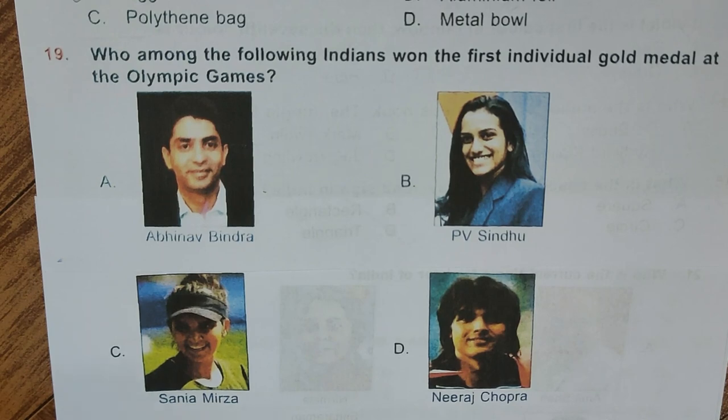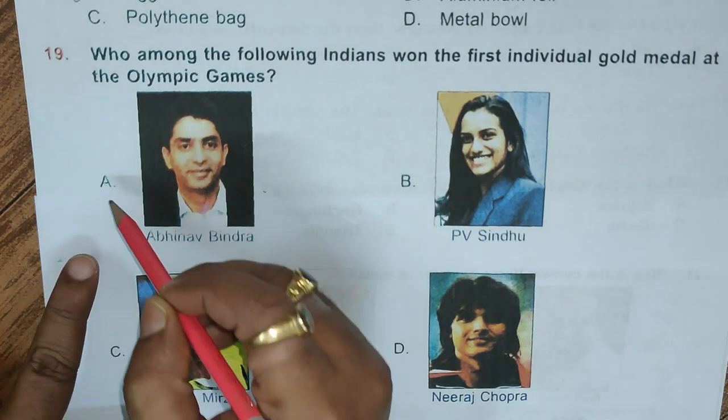Question 19: Who among the following Indians won the first individual gold medal at the Olympic Games? A. Abhinav Bindra, B. P.V. Sindhu, C. Sania Mirza, D. Neeraj Chopra. Correct answer is A, Abhinav Bindra.